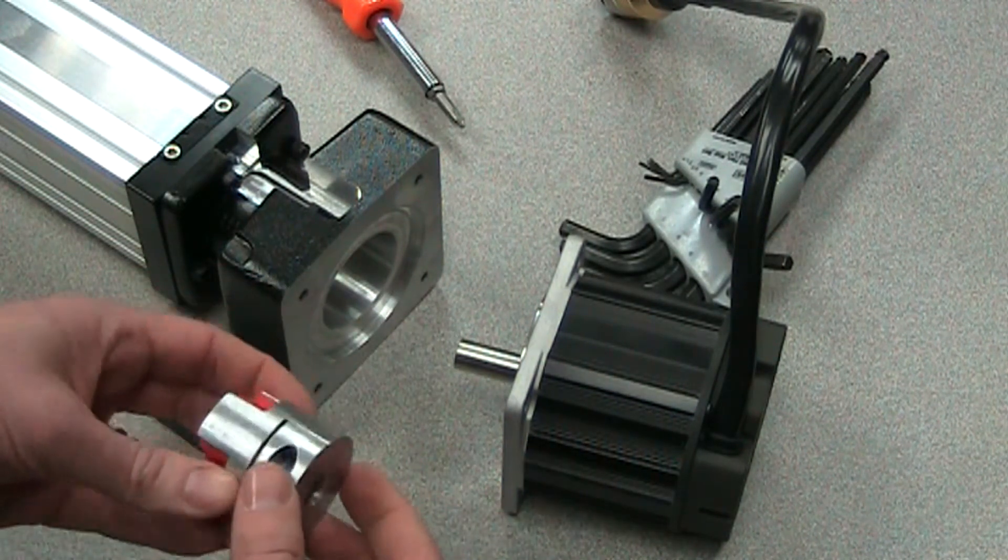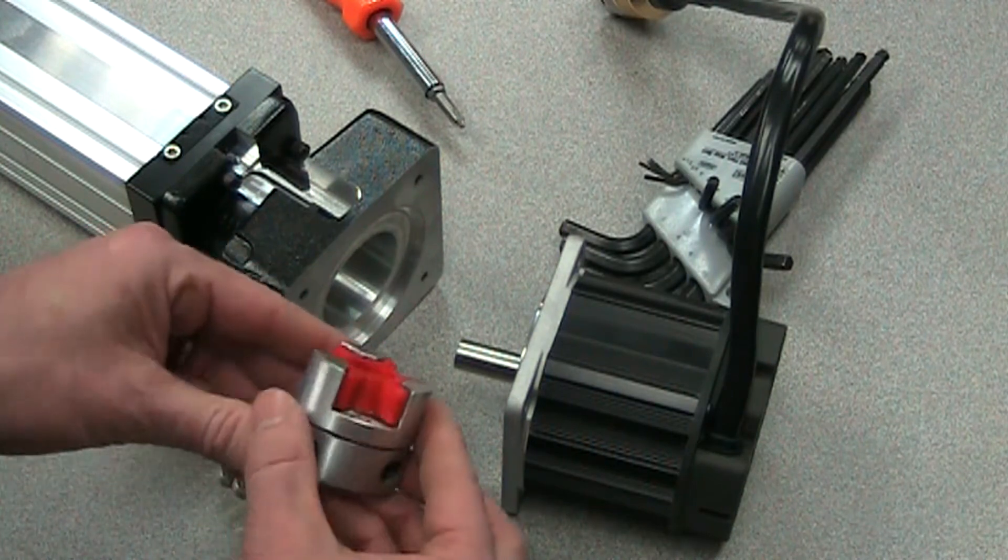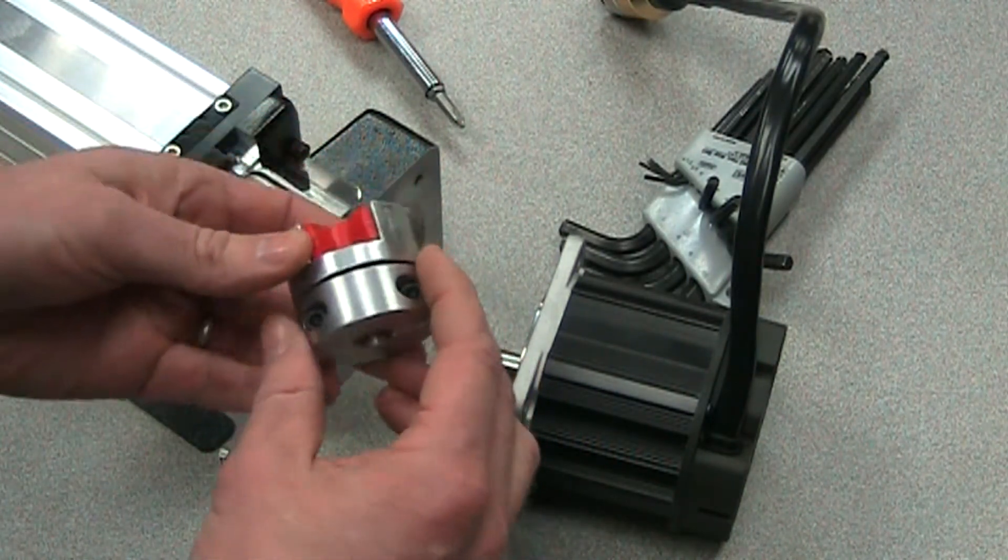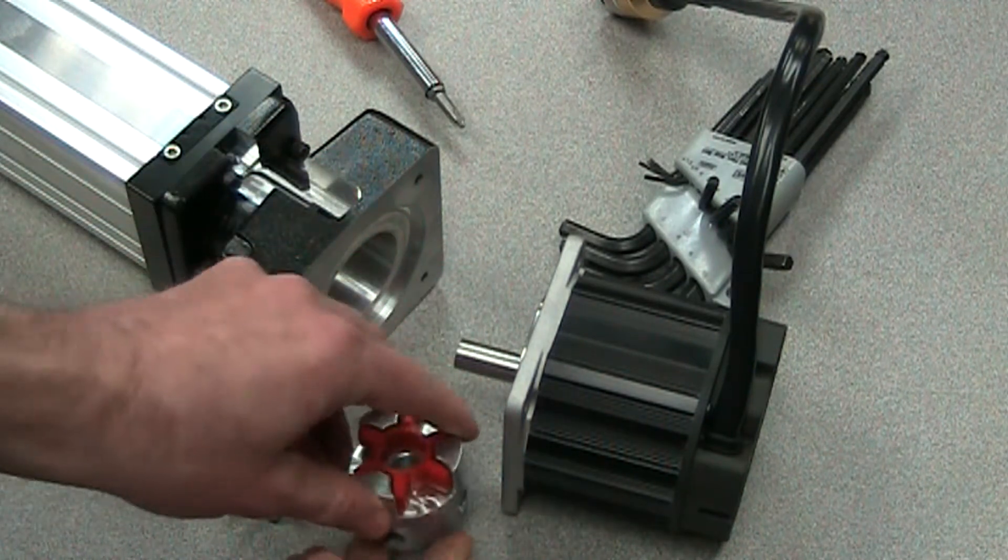So first of all, I took everything apart. You can see this is the coupler, it's got a spider gear in the center, and this is the motor half, so we'll have to mount that to the motor.